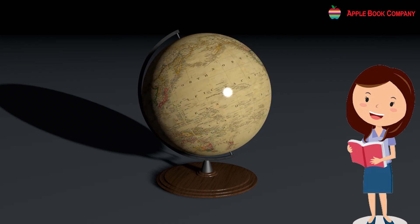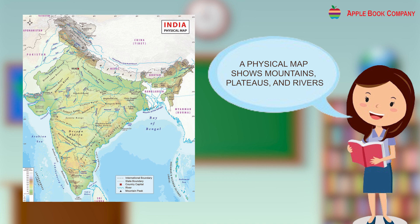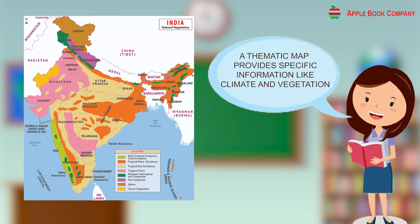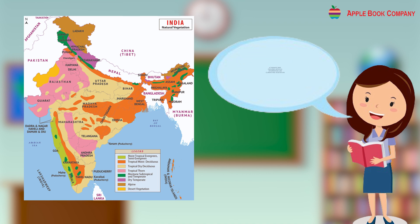A physical map shows mountains, plateaus, and rivers. A political map shows countries and their boundaries. A thematic map provides specific information like climate and vegetation.